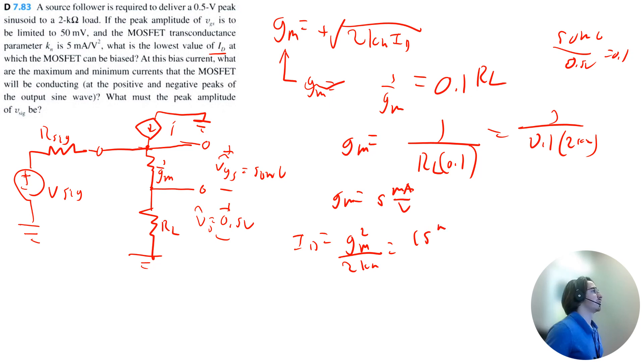So that is 5 milliamp per volt squared, divided by 2 times kn, which is also 5 milliamp per volt squared, and I get 2.5 milliamps for ID. Excellent.